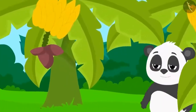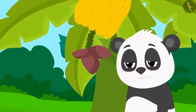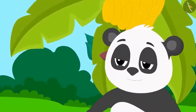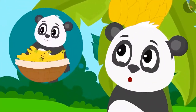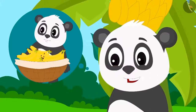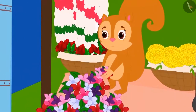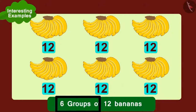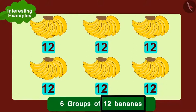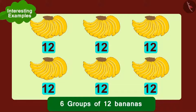Golu Panda's banana orchards reaped a good harvest this season. He thought that he could earn a lot of money by selling these bananas in the market. At the same time, Chanda Squirrel had set up her flower stall. Golu had arranged six groups of twelve bananas each. Children, can you write the number of bananas Golu had in the form of multiplication?